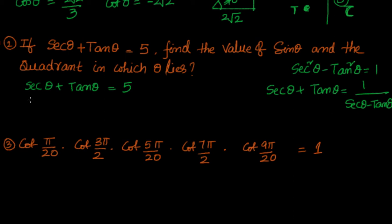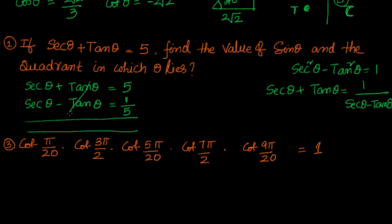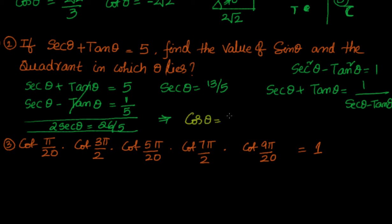Applying this, sec theta minus tan theta equals 1 divided by (sec theta plus tan theta), which is 1 by 5. Adding the two equations, 2 sec theta equals 5 plus 1 by 5, which is 26 by 5. So sec theta equals 13 by 5, giving cos theta equals 5 by 13.